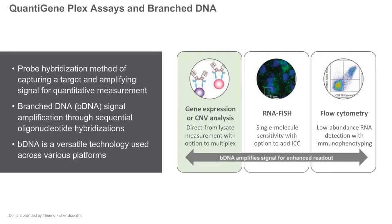The QuantiGene Plex assay uses branched DNA technology for signal amplification to measure gene expression, probing RNA and DNA. Branched DNA uses sequential hybridization of oligonucleotides to capture target RNA or DNA in order to amplify a signal for quantitative measurement. Thermo Fisher uses branched DNA in several platforms, including gene expression, fluorescence in situ hybridization, and flow cytometry.